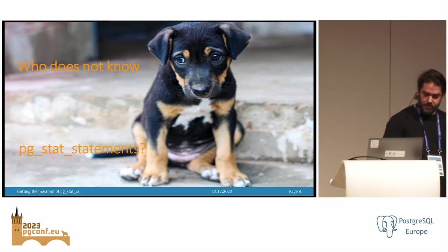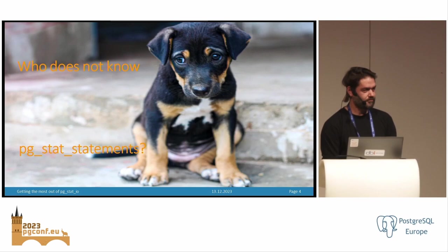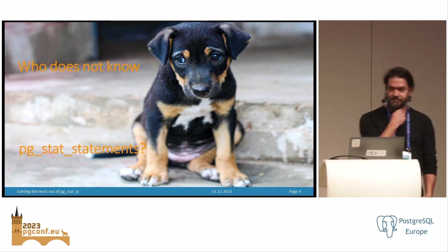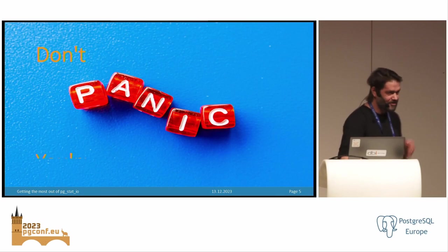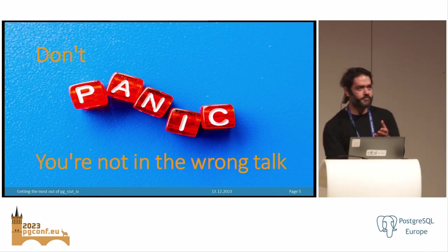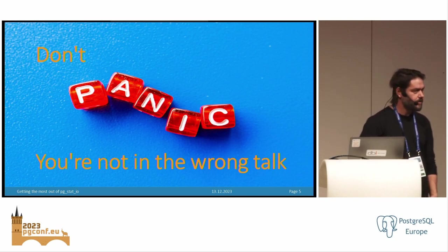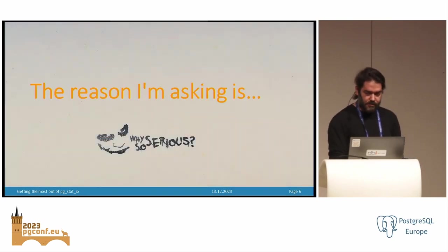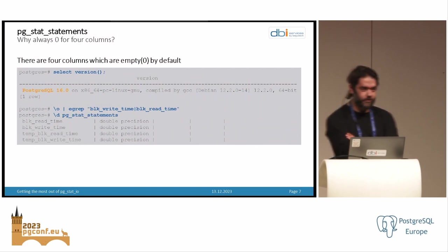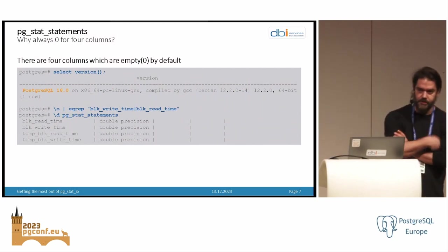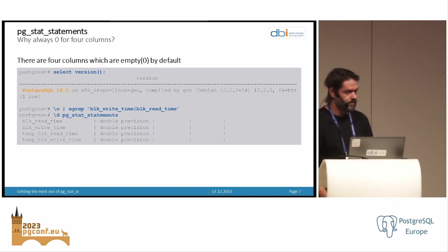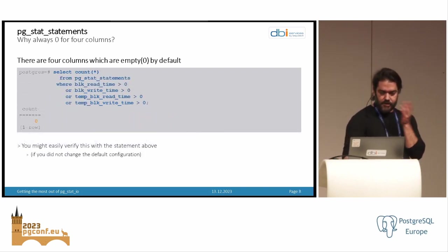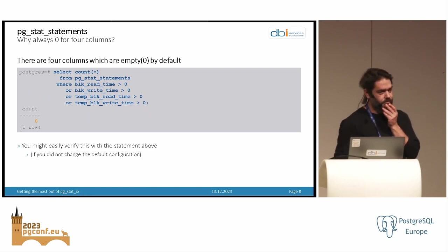So who of you does not know pg_stat_statements? Everybody knows that? Okay. So don't panic, you're not in the wrong session. It's still about pgstat.io, but there's something which you by default cannot find in pg_stat_statements, and it's the same story for pgstat.io. The reason I'm asking is this: in the default configuration, you will not see any statistics — it's actually a zero for the I/O timings. You have four columns: the read time, write time, and the same for the temp stuff, and they will be zero. So nothing will be recorded there.